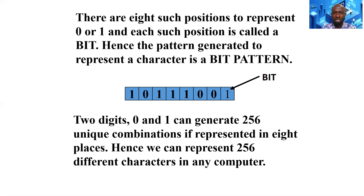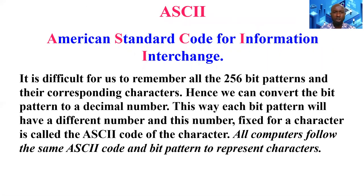Two values — zeros and ones — can generate 256 unique combinations when represented in eight places. Hence, we can represent 256 different characters in any computer system. We also have what we call ASCII — the American Standard Code for Information Interchange. It is difficult to remember all 256 bit patterns and their corresponding characters, so we convert the bit pattern to a decimal number. Each bit pattern has a different number, and this number, fixed for a character, is called the ASCII code of the character.